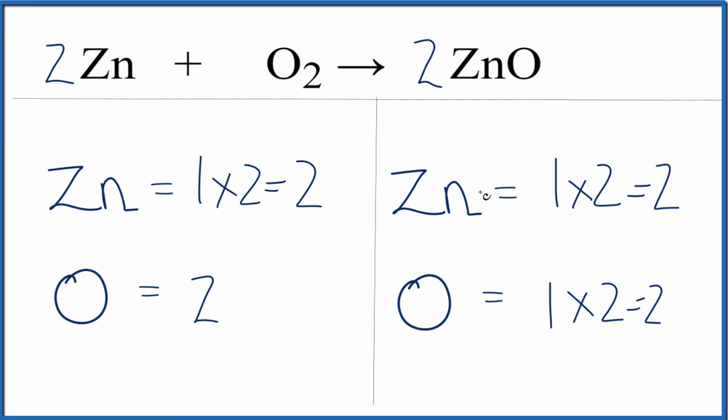So now everything is the same on both sides of the equation, and this equation is balanced. This is Dr. B with the balanced reaction for Zn plus O2 gives ZnO. Thanks for watching.